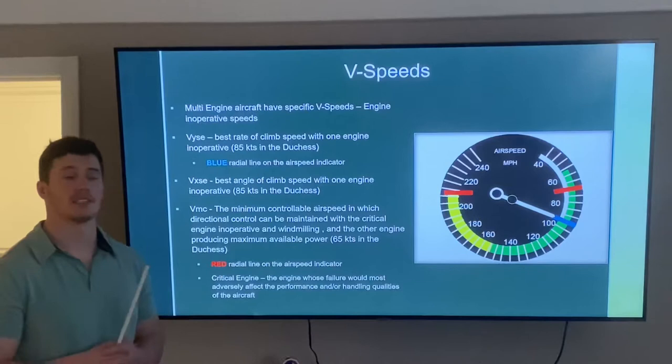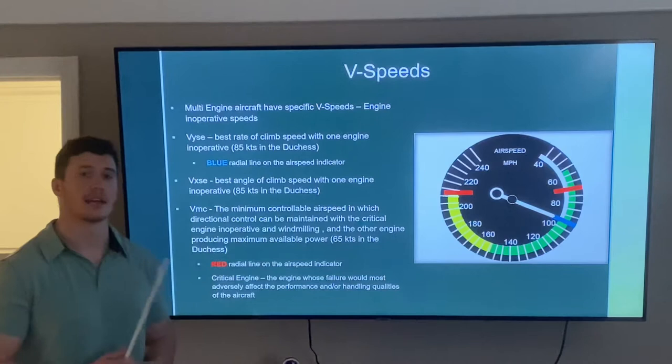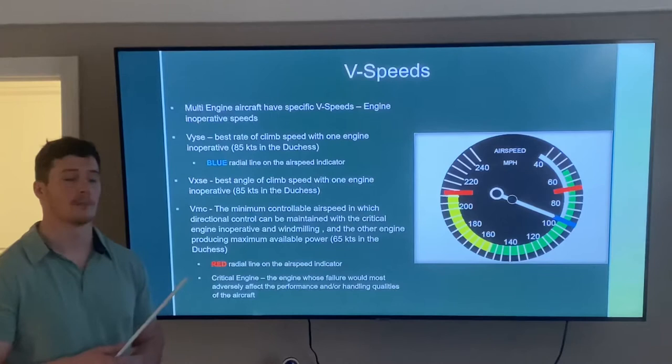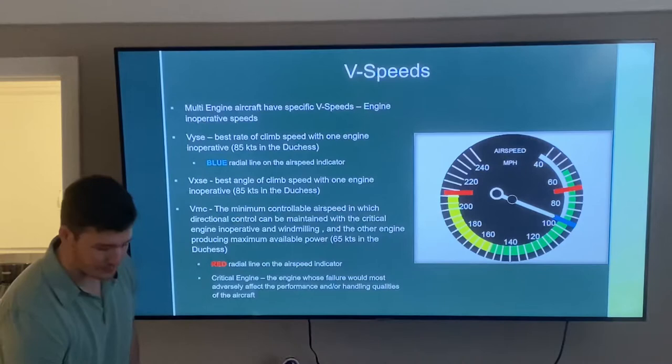Next we have VXSE, which is our best angle of climb for single engine inoperative — also 85 knots in the Duchess. Most importantly, identified by the red radial on the airspeed indicator is VMC. VMC is the minimum control airspeed at which directional control can be maintained with the critical engine inoperative and windmilling, and the other engine producing maximum available power. The critical engine is the one whose failure would most adversely affect performance and handling of the aircraft.